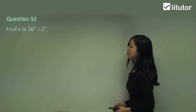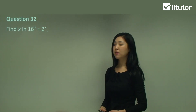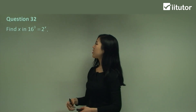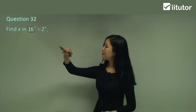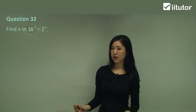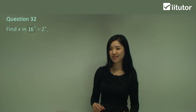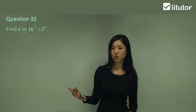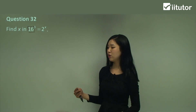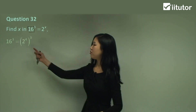Question 32: find x in 16 cubed equals 2 to the power of x. I'm going to leave the right side and work on the left. Now with indices, a very important thing is it's very useful if you have the same base — because if you have the same base, the indices must be the same as well. So I'm going to break down 16 into powers of 2. You know that 16 is 2 to the power of 4, so I'll change that to 2 to the power of 4.